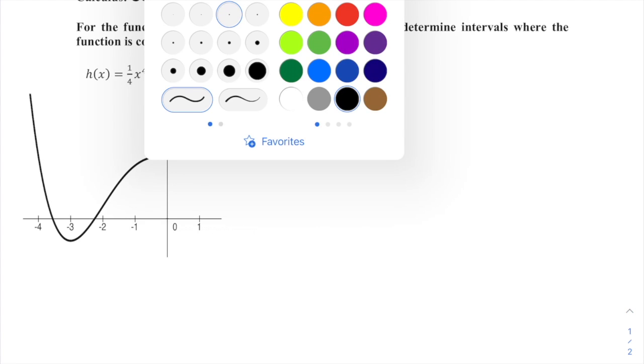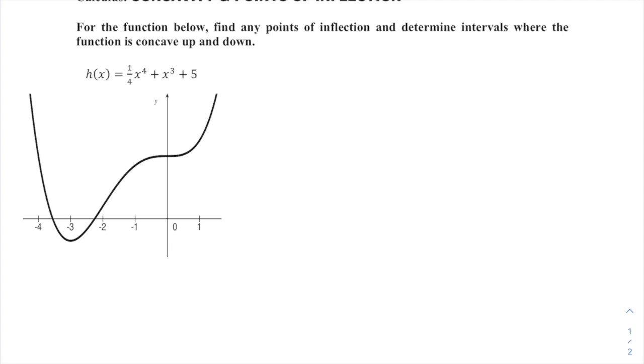Concavity is related to the second derivative. That's what we're looking to deal with here, and a point of inflection is where the second derivative changes signs. So let's get to that second derivative. It should be pretty easy since we've got a polynomial here. So h prime of x is going to be x to the third plus 3x squared. And h double prime of x, the second derivative, will be 3x squared plus 6x.